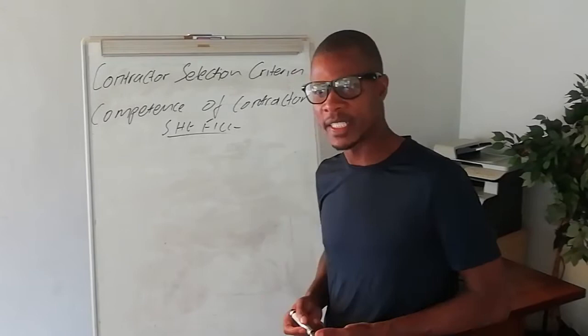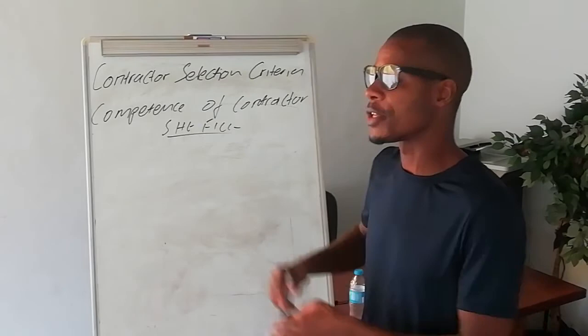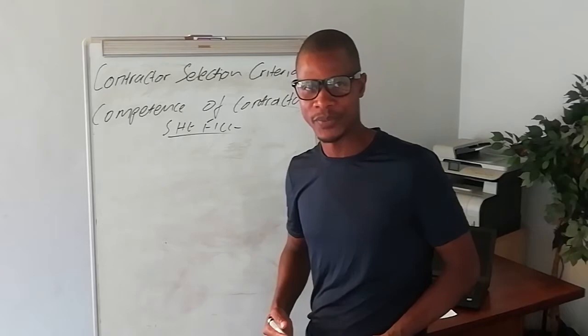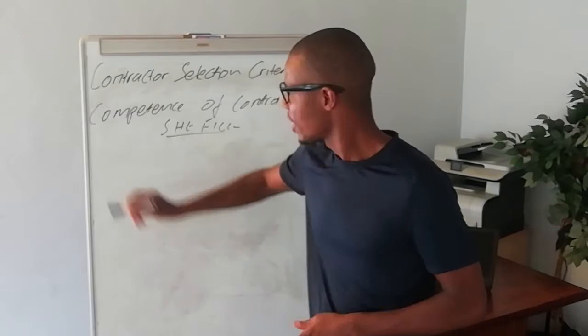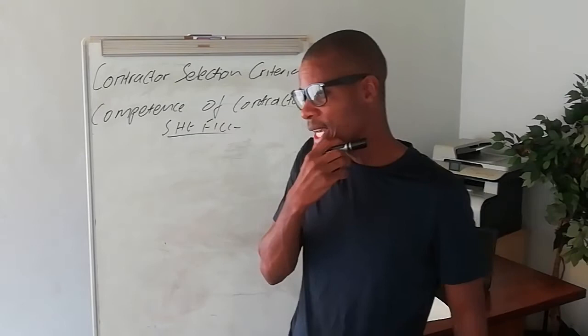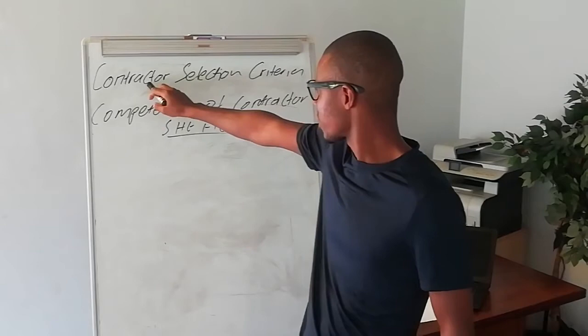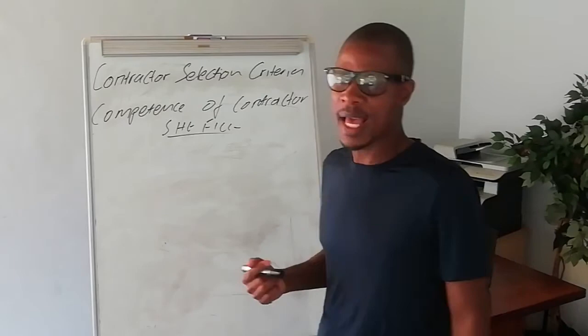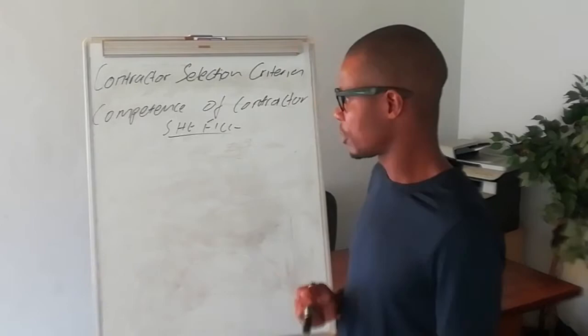If you are now on the construction part — that is Module 2 or the construction module — there is a section called 'competence of the contractor.' So you see that these two things are actually the same. In one module they call it contractor selection criteria, and in the other module they call it competence of a contractor. If you master this in IGC, when you go to the construction part, remember it's actually the same.